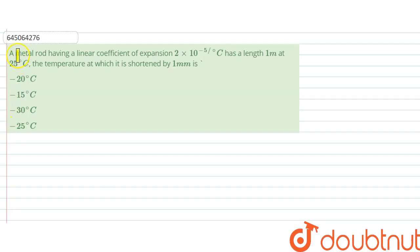The question says: A metal rod having a linear coefficient of expansion 2 × 10⁻⁵ per degree Celsius has a length 1 meter at 25 degrees Celsius. The temperature at which it is shortened by 1 millimeter is what?